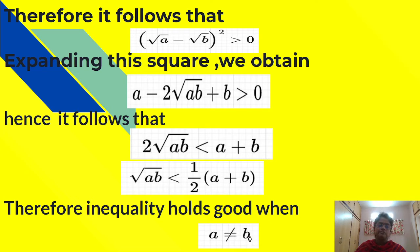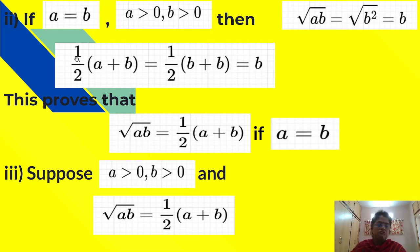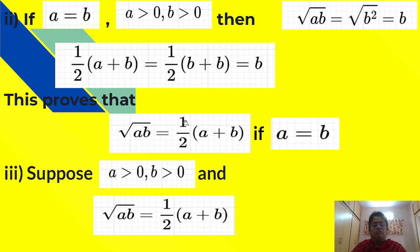Second case: if a equals b, and a greater than 0, b greater than 0, then under root ab equals under root b squared, which equals b. And one half into (a plus b) equals one half into (b plus b) equals one half into 2b, which equals b. This proves that square root of ab equals one half into (a plus b) when a equals b.